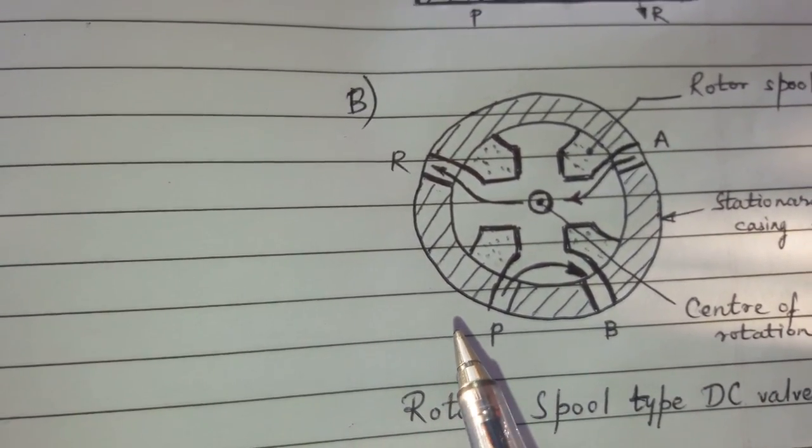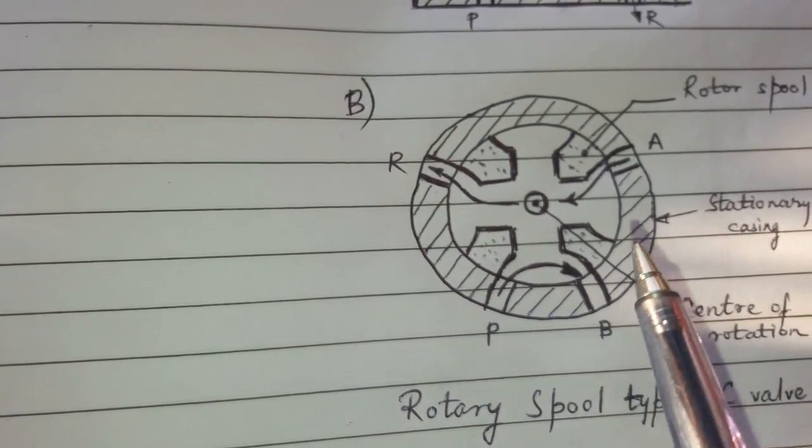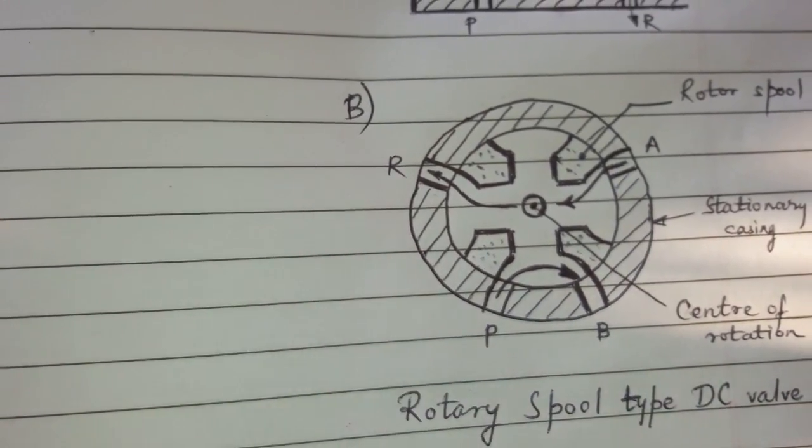Port P is connected to port B and port A is connected to the oil tank, port R.